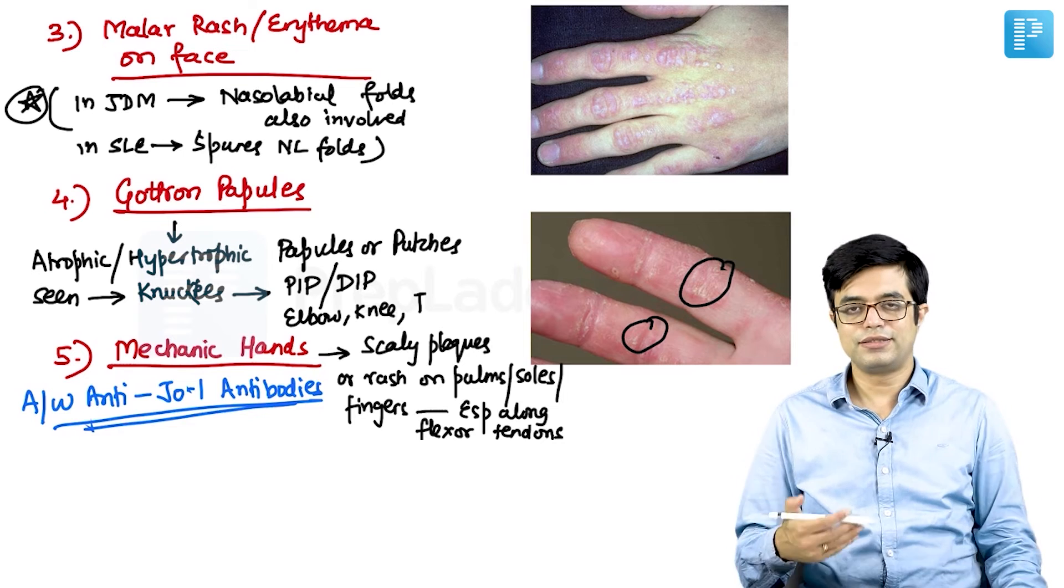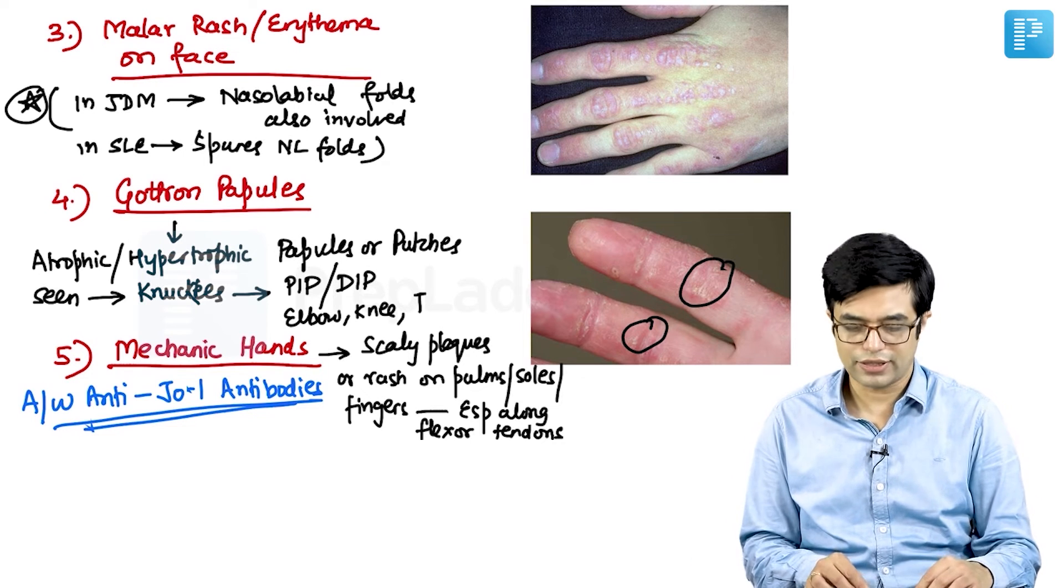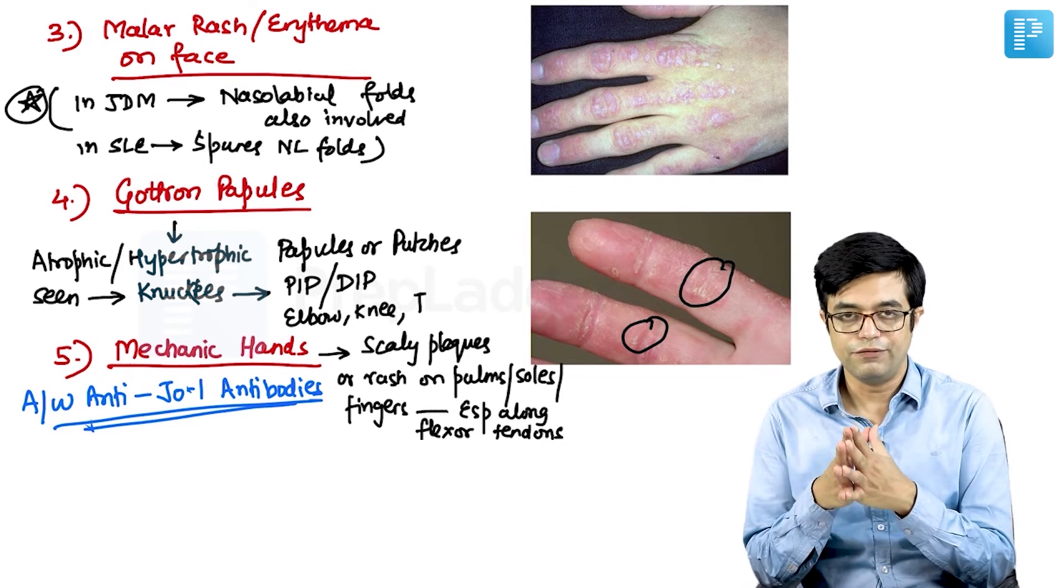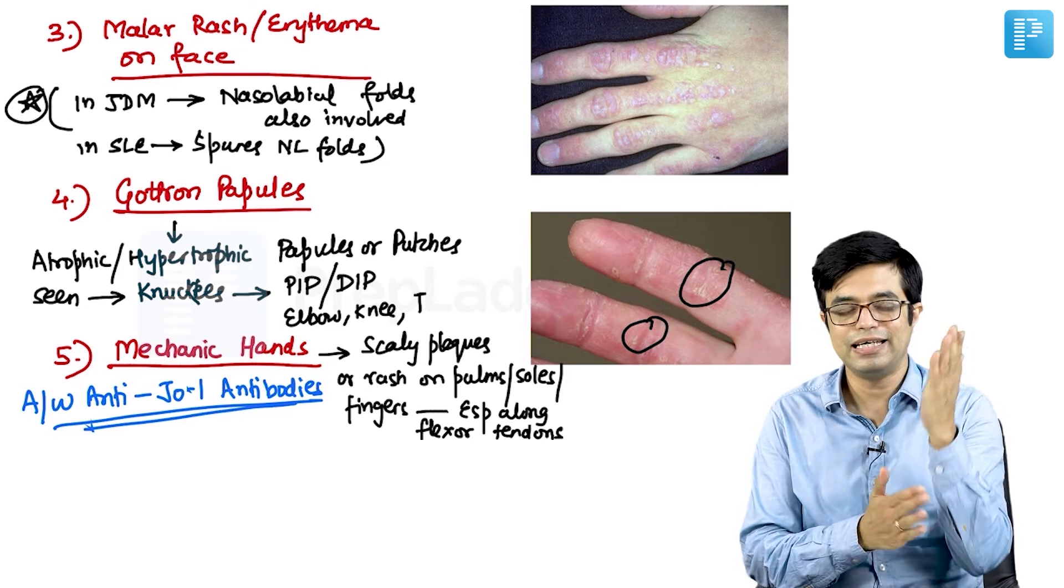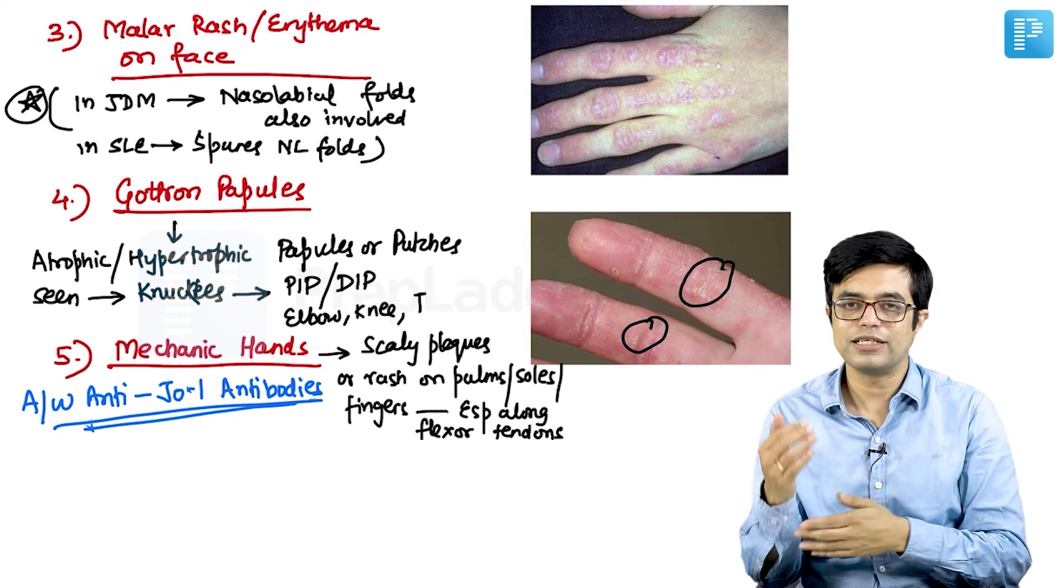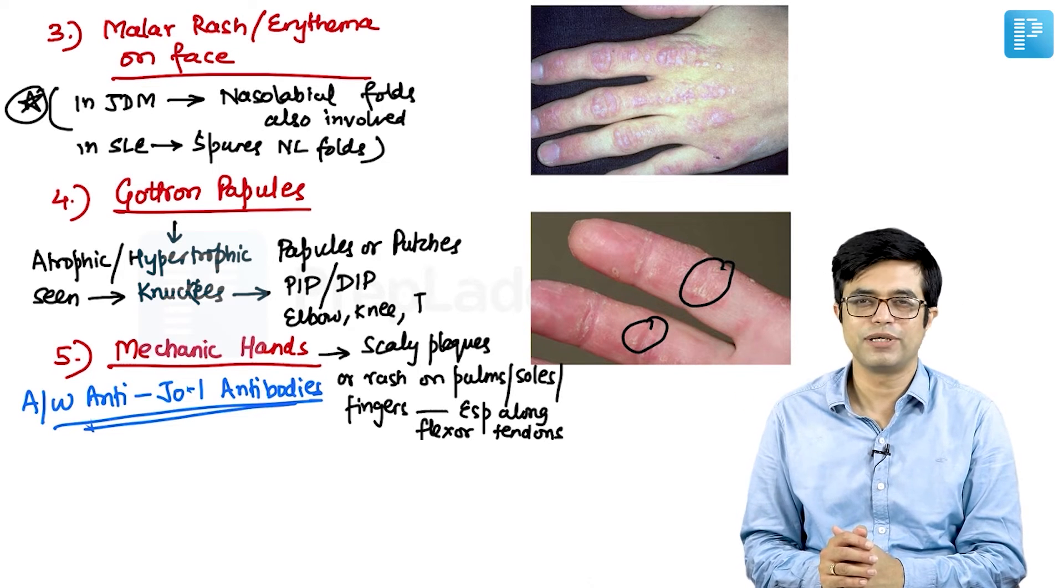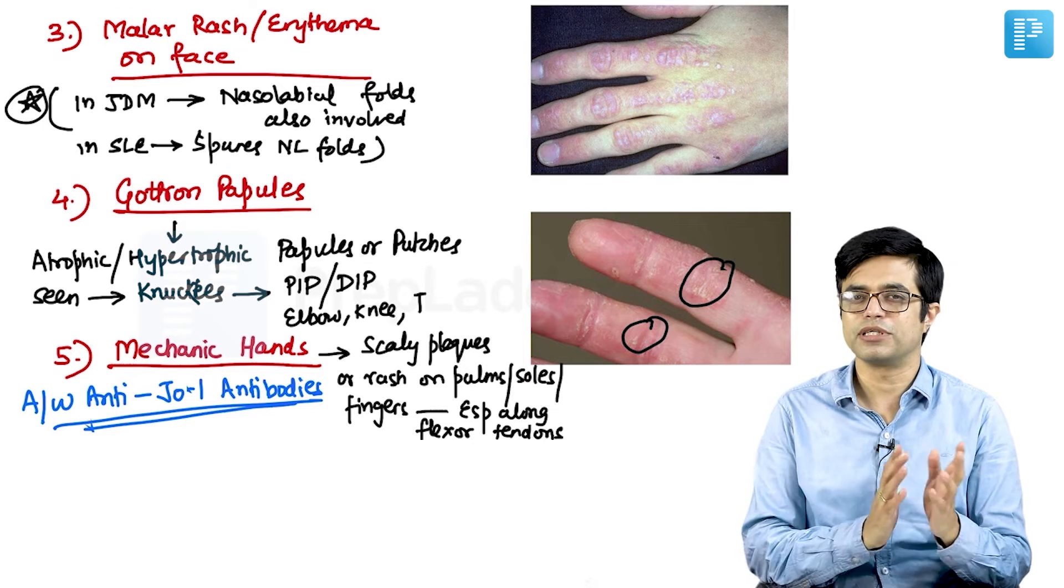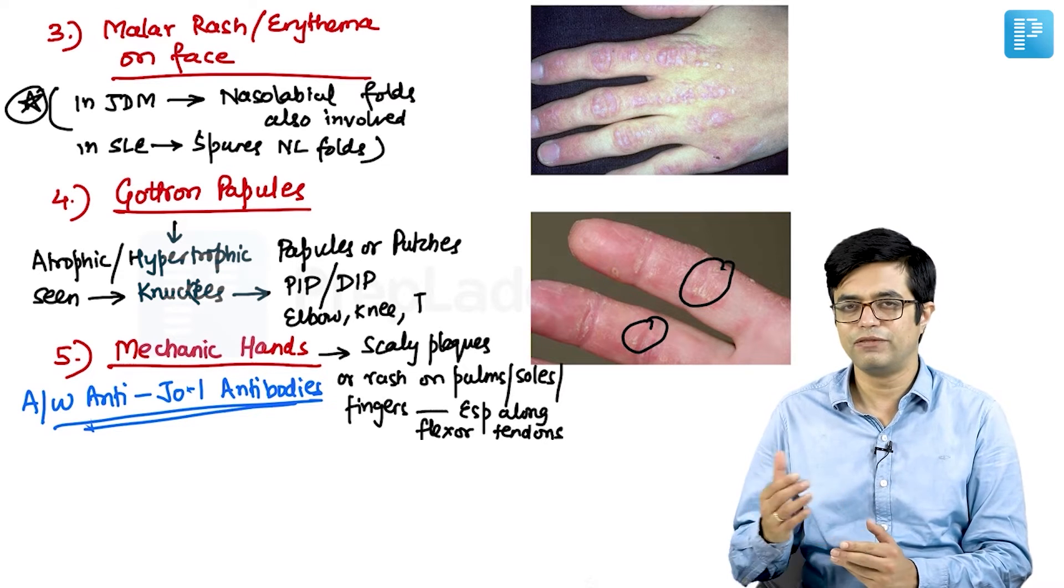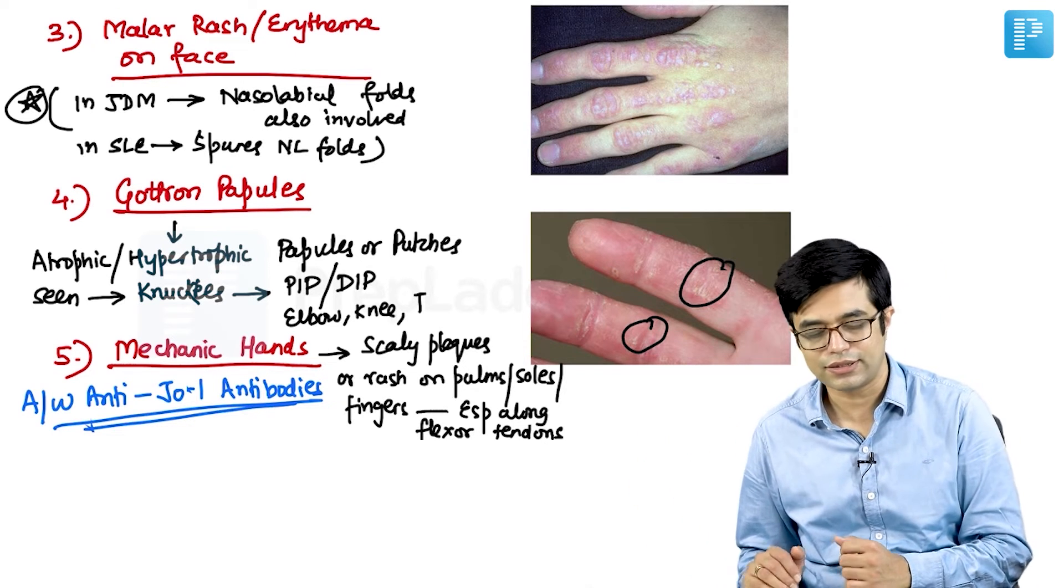And other than this, the other cutaneous manifestations like erythema, diffuse erythema can sometimes be seen in elbows as well as the knee and ankle joints, but they are not considered diagnostic and they are not present in all patients of JDM. To keep it simple, we will not go into further details than this.